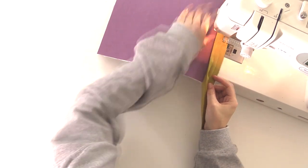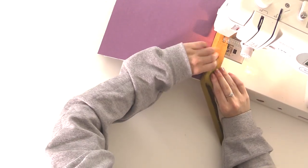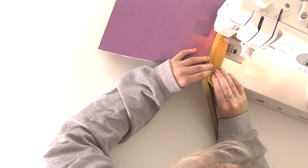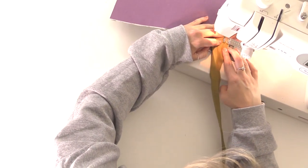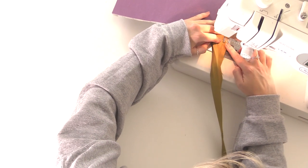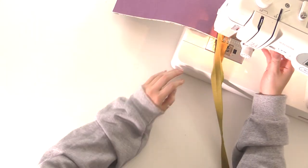So what you want to do is sew it down the crease line until you get to about a quarter of an inch from the edge. Once you get a quarter of an inch from the edge, you want to stop and take it out of your machine.